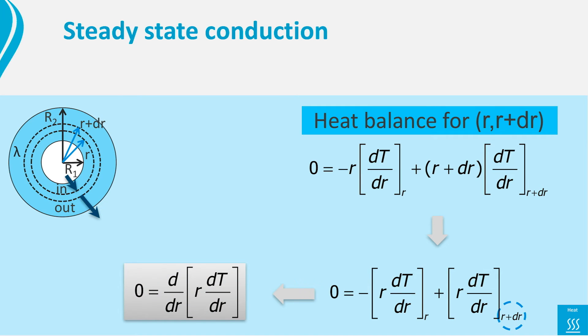This equation can be shortened further, as it is actually the derivative of the function r times dT/dr, just like we have done for the strip, but now with an extra coordinate r. This is a consequence of the cylinder geometry we are dealing with.